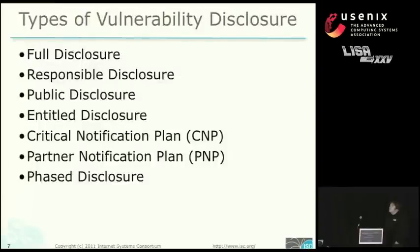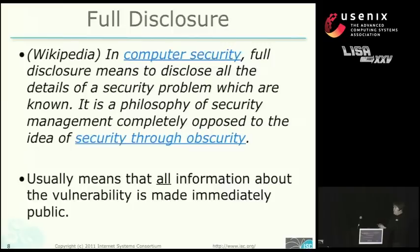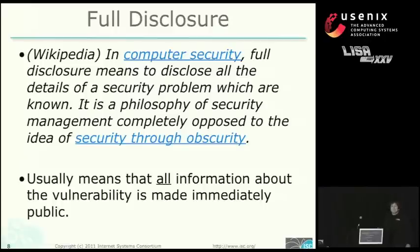There are a lot of different kinds of vulnerability disclosure. Full disclosure means exposing all the details — it's basically exactly the opposite of a security through obscurity model. This is telling everybody everything, and it usually means all the information is made immediately public. This is good for some people and problematic for others. It can be very problematic for everyone because the black hats might find the information before you do.